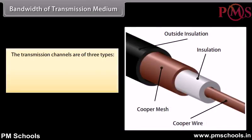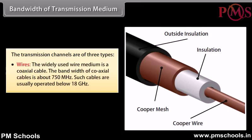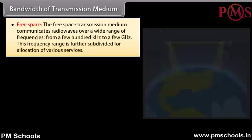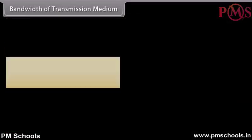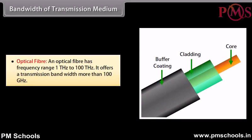Bandwidth of transmission medium: The transmission channels are of three types. Wires — the widely used wire medium is a coaxial cable; the bandwidth of coaxial cables is about 750 MHz, and such cables are usually operated below 18 GHz. Free space — communicates radio waves over a wide range of frequencies from a few hundred kHz to a few GHz. Optical fiber — has a frequency range of 1 THz to 100 THz and offers a transmission bandwidth of more than 100 GHz.